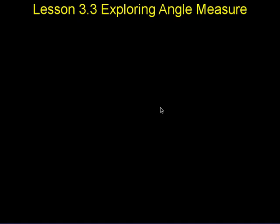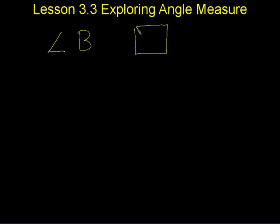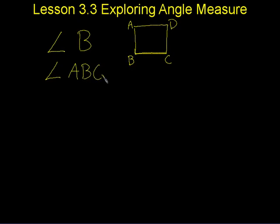A couple things we're going to go over to start with — first is a couple symbols. So whenever you see this symbol, it means angle B. So if we had a square, each vertex would have a label. Angle B would be from A to B to C. Another way that you might see that written is angle A, B, C.